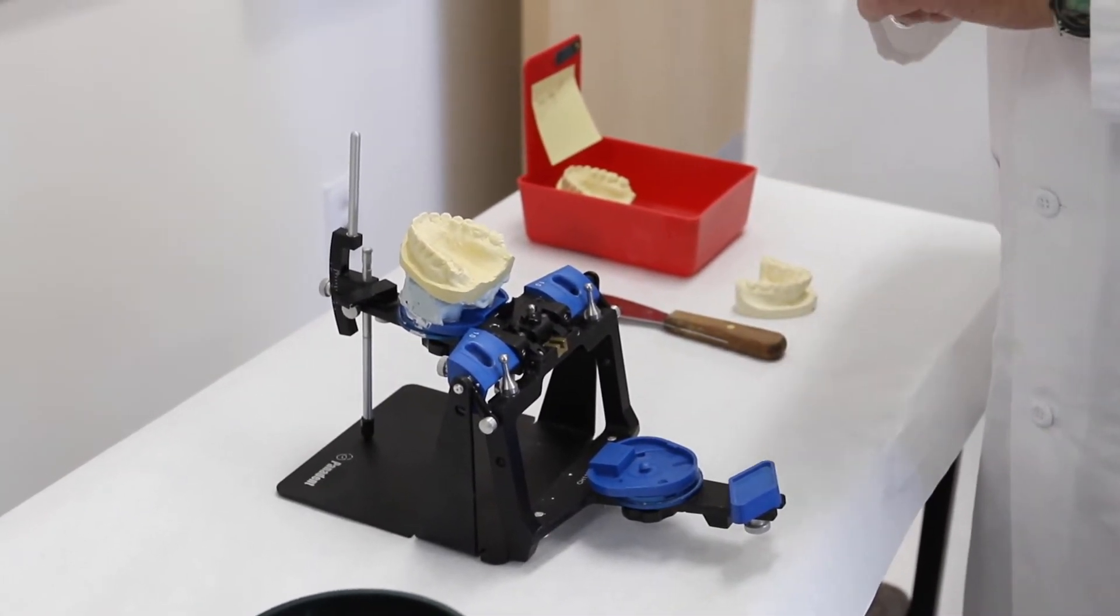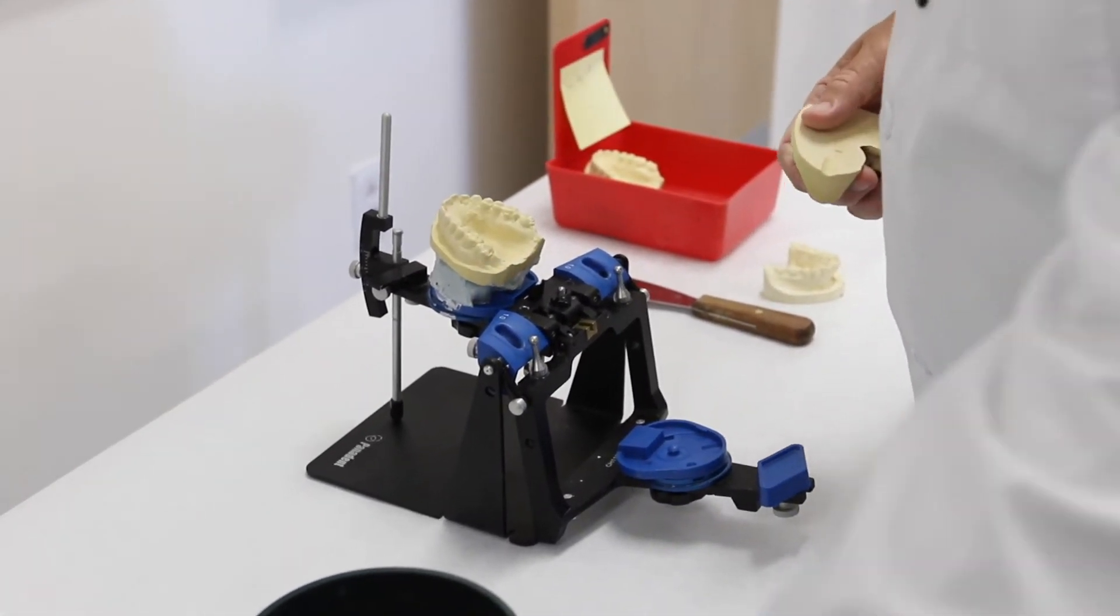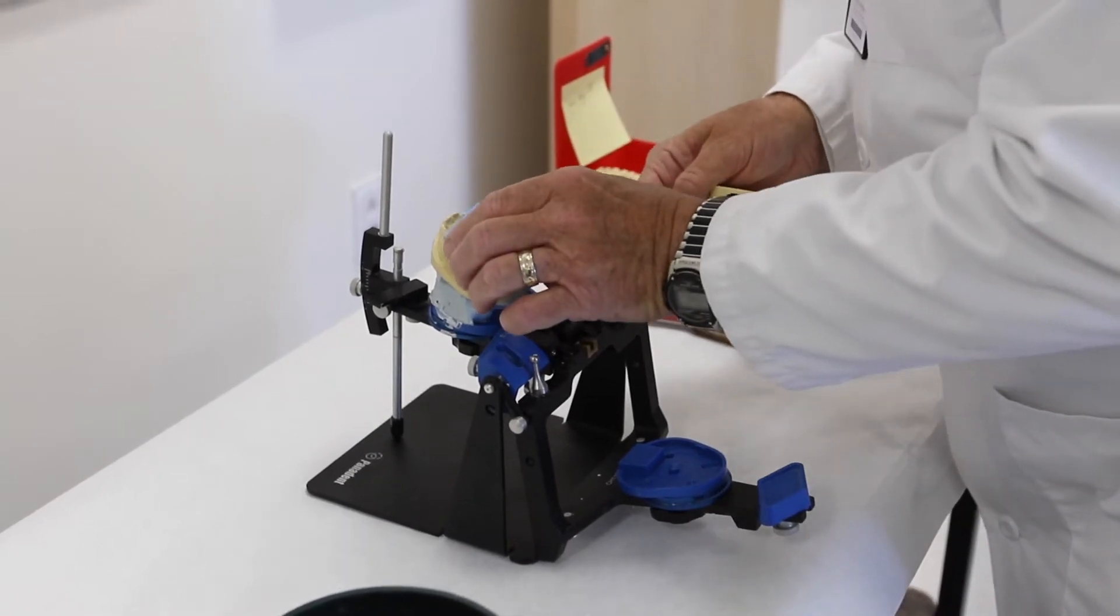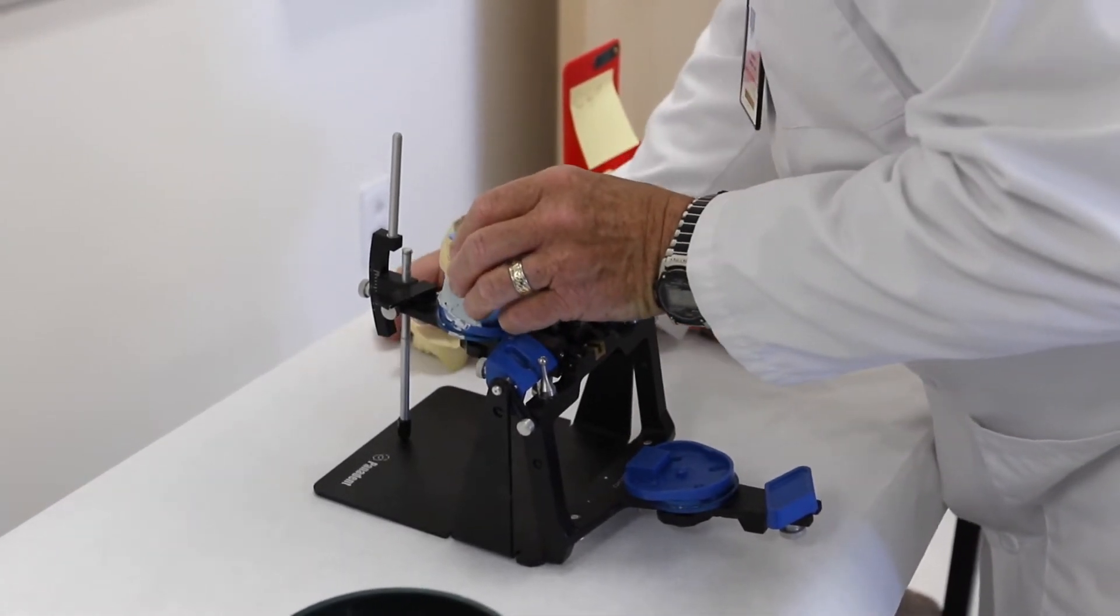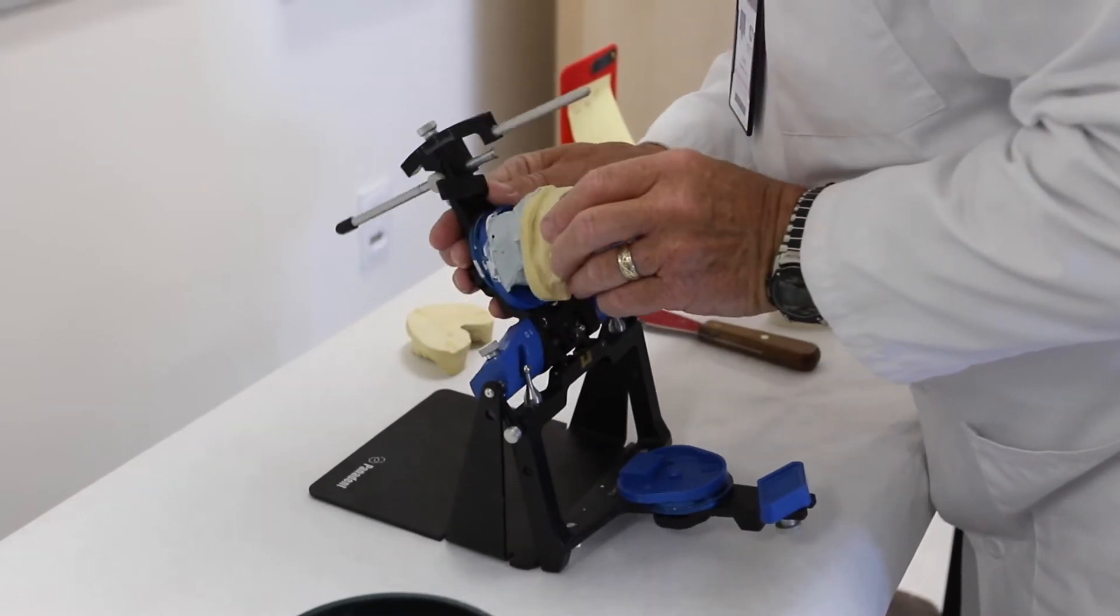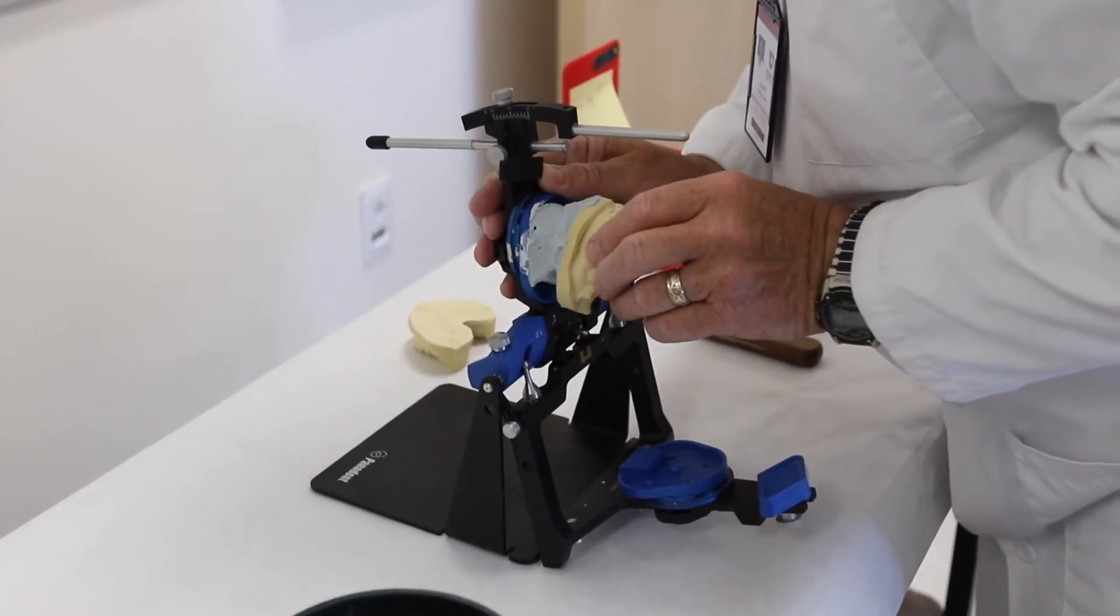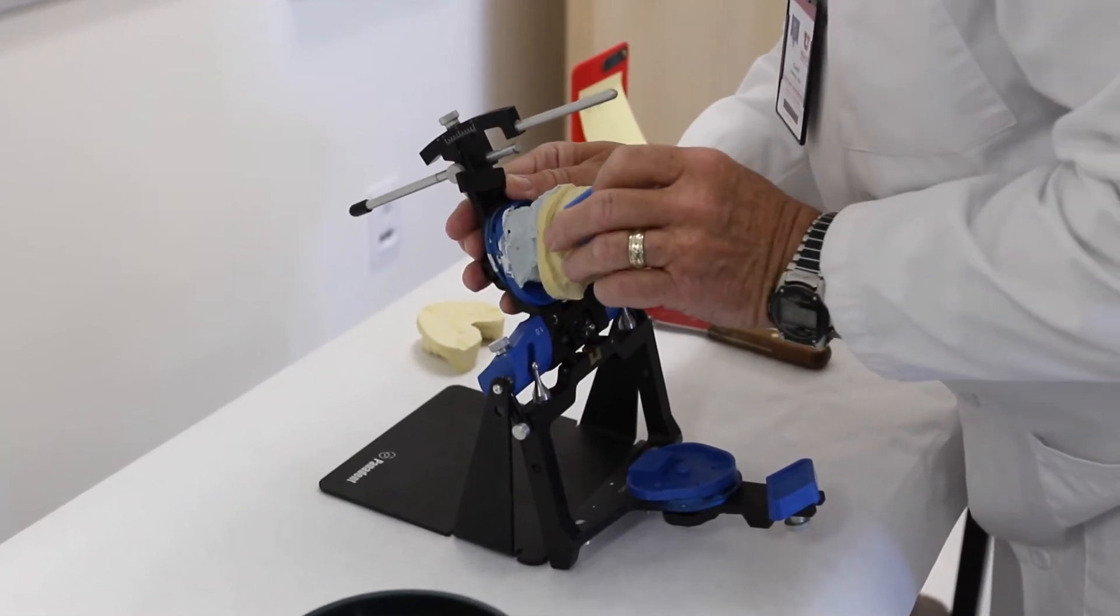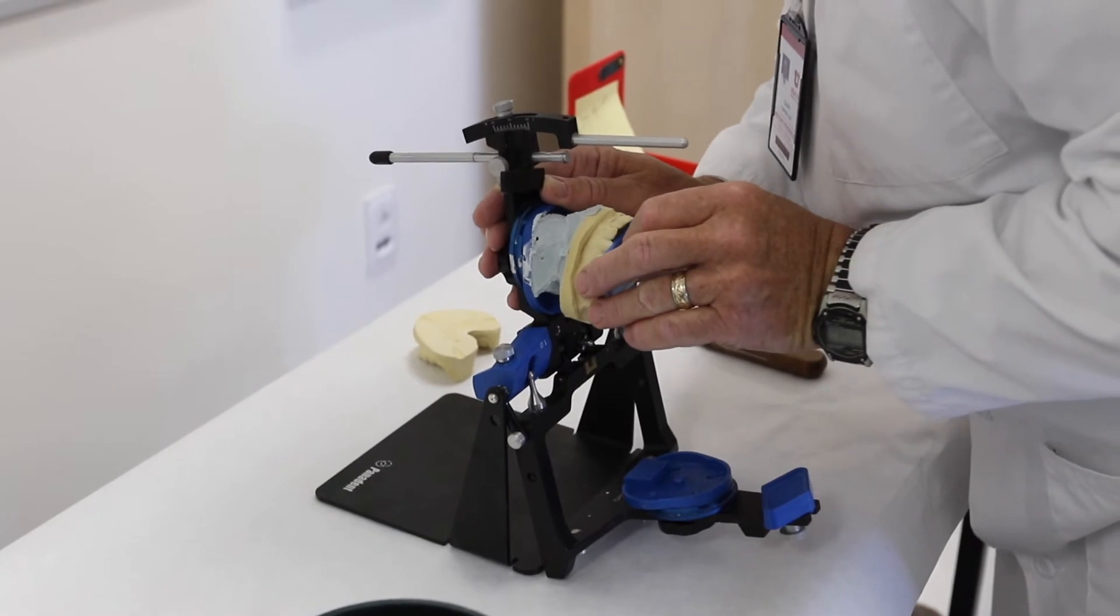So I will take the mandibular model and the wax record and we'll place the wax record on the maxillary teeth, just like they were in the patient's mouth when we did the diagnostic measurements, and get the right position.